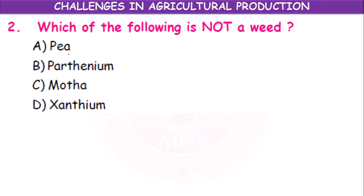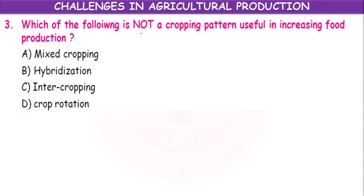Which of the following is not a weed? Parthenium, Xanthium, and Motha are all weeds. Which of the following is not a cropping pattern useful in increasing food production? Mixed cropping, hybridization, intercropping, or crop rotation? Hybridization is not a cropping pattern — it is a method of crop improvement.